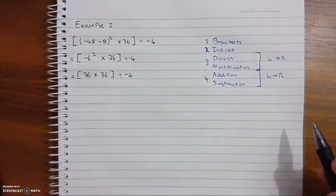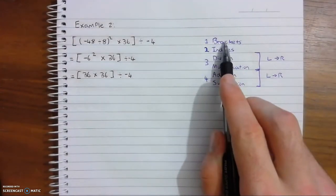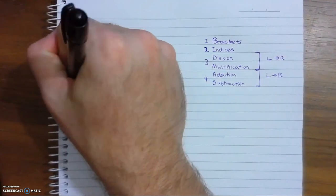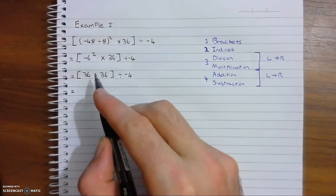Alright, now we still have brackets, so we're still on our first level right now. So 36 times 36 equals